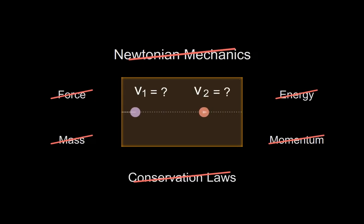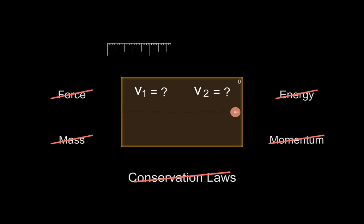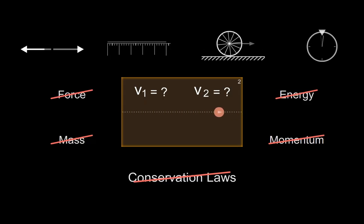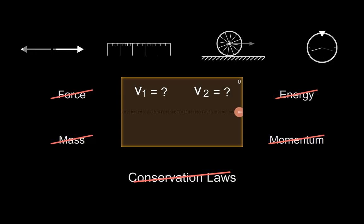But how do we even approach something like this? Where do we even begin? We are essentially being asked to create a theory of mechanics from scratch. The first place to look is what we expect to be true of the laws of nature themselves — things like changing units of measurement should not change the laws of physics, neither should changing frame of reference or the direction of space and time. Using these four symmetry principles, not only can we resolve this system, but those involving more than two particles as well — a system which happens to be non-deterministic in Newtonian mechanics.